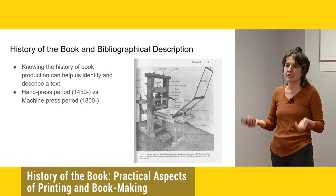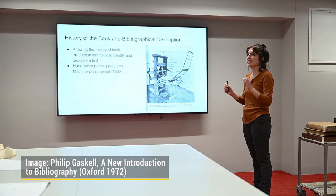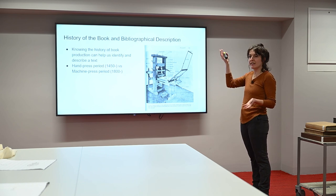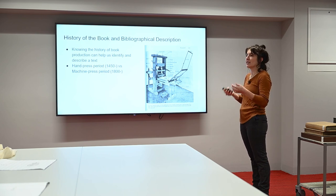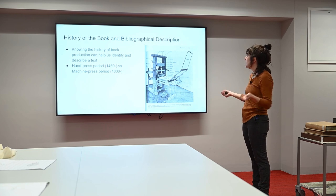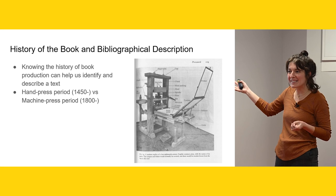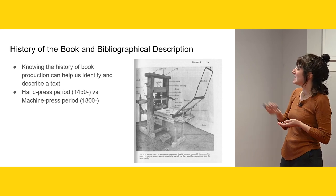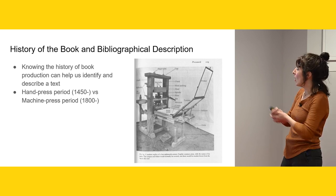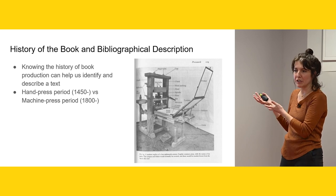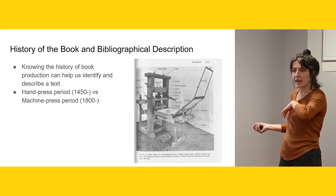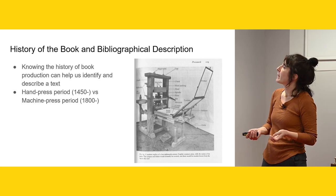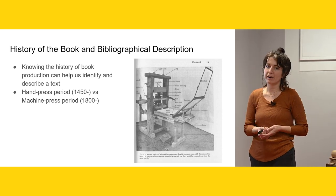In order to understand hand press book production, you have to think about the materials that produced the text — not just what the text is made out of, but how it was created and what machinery created it. We were just upstairs in the scan lab looking at all these wonderful imaging and copying and archival digital machines. This is a Gutenberg hand press, and it has all these different parts that an expert had to know how to use, in a printing house where they have apprentices, journeymen, editors, and all different people handling the text even before it gets sold. Knowing the history of the production helps us identify and describe texts.